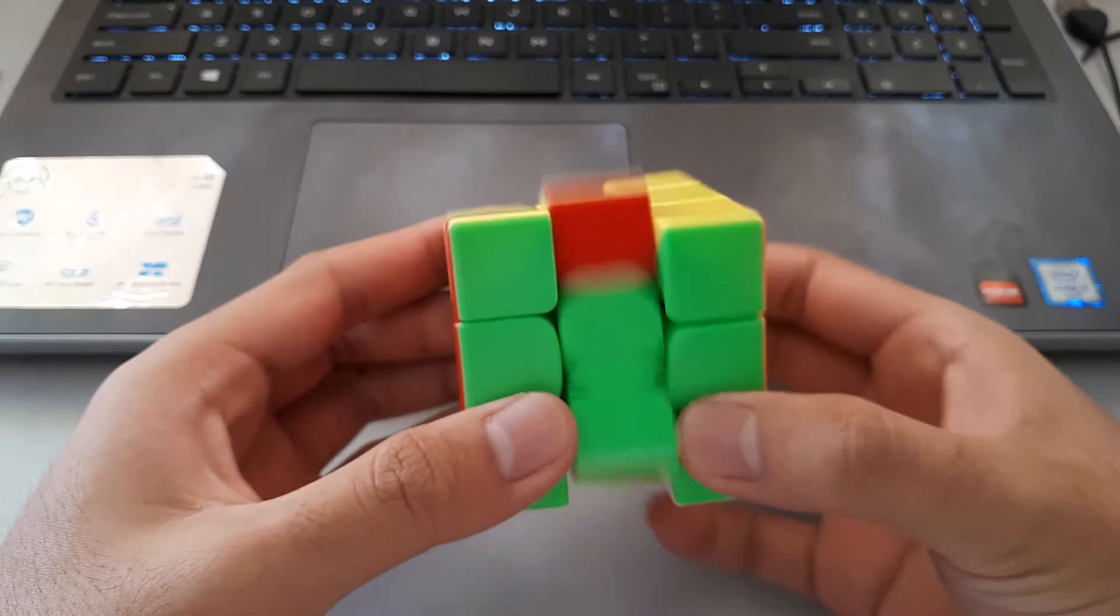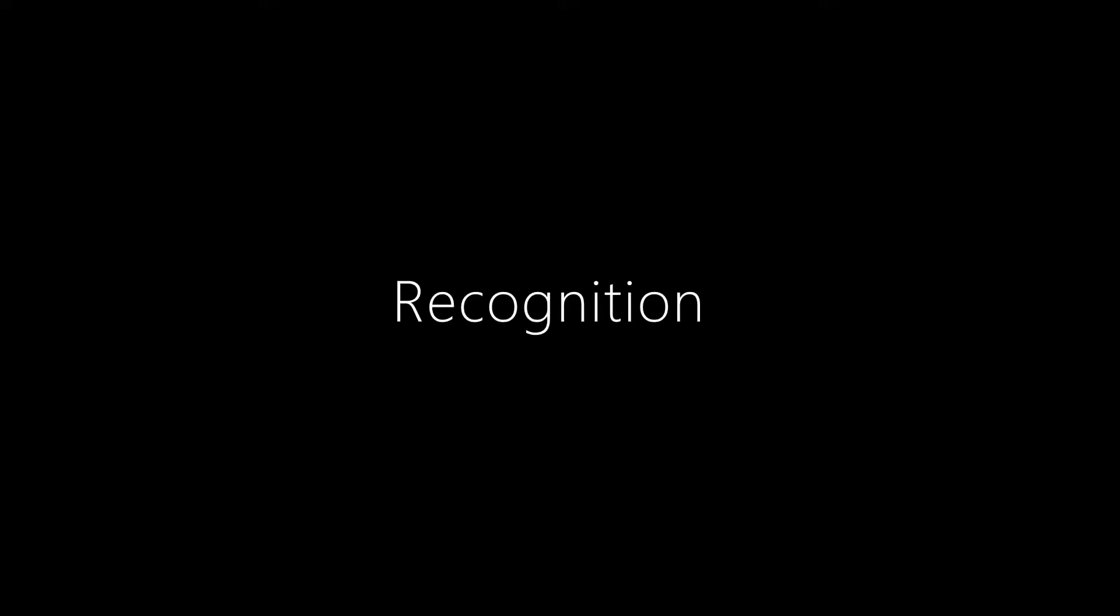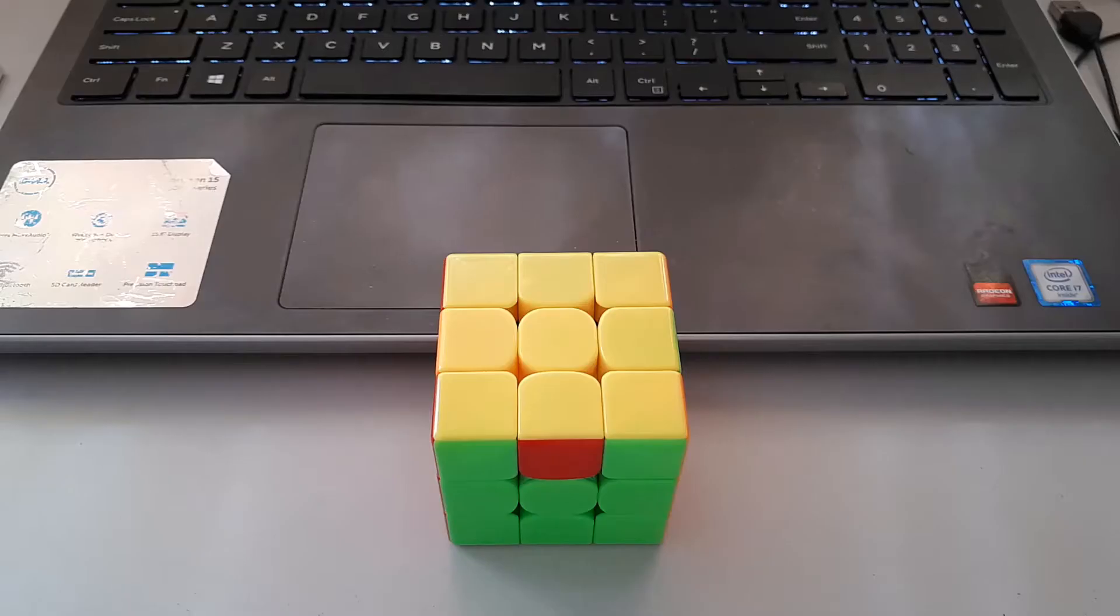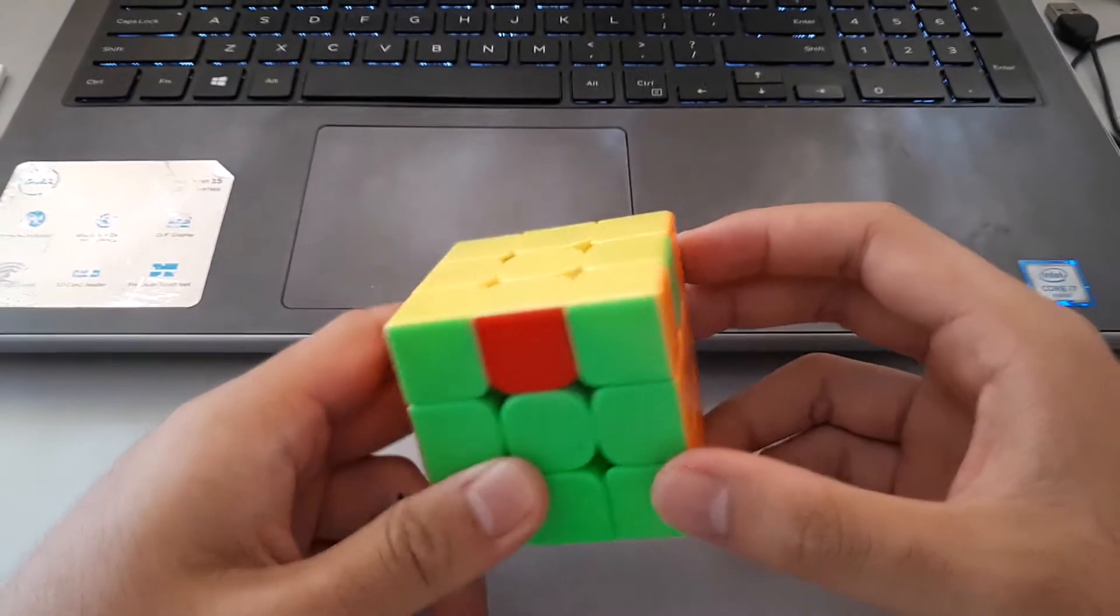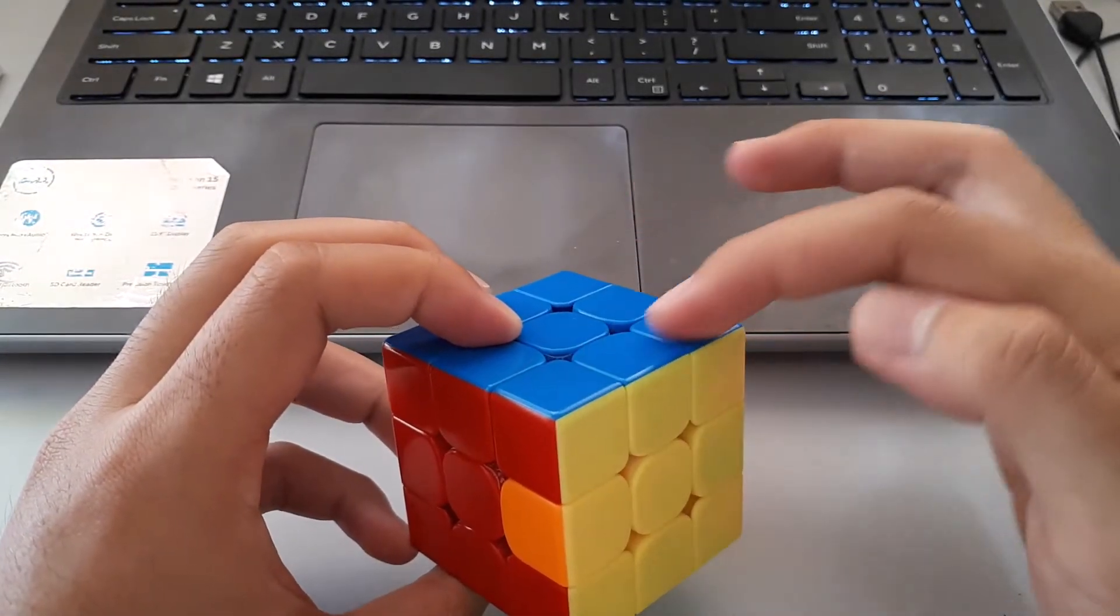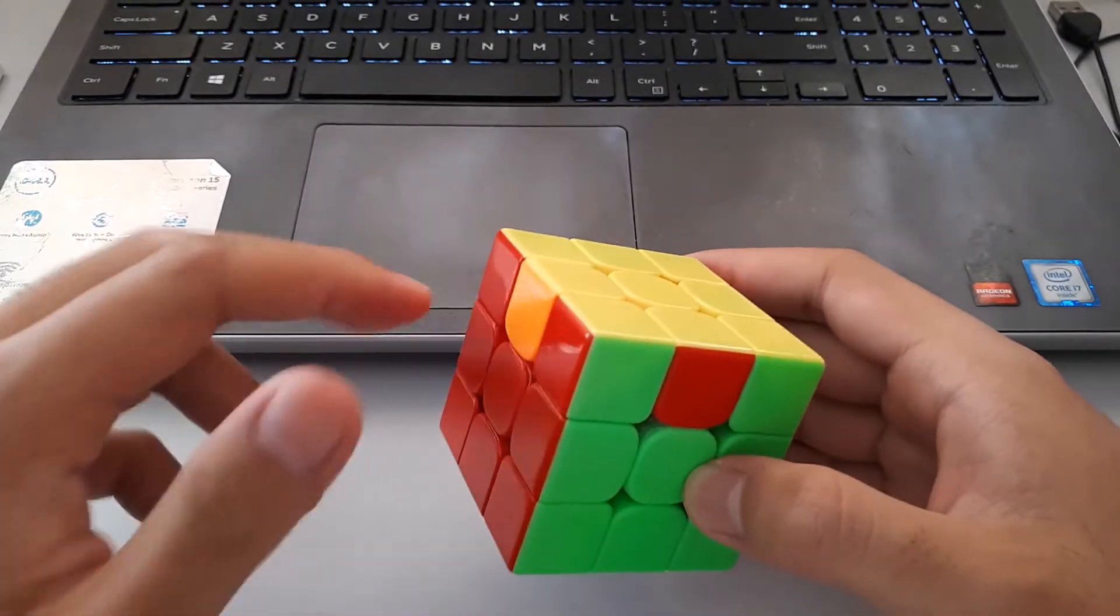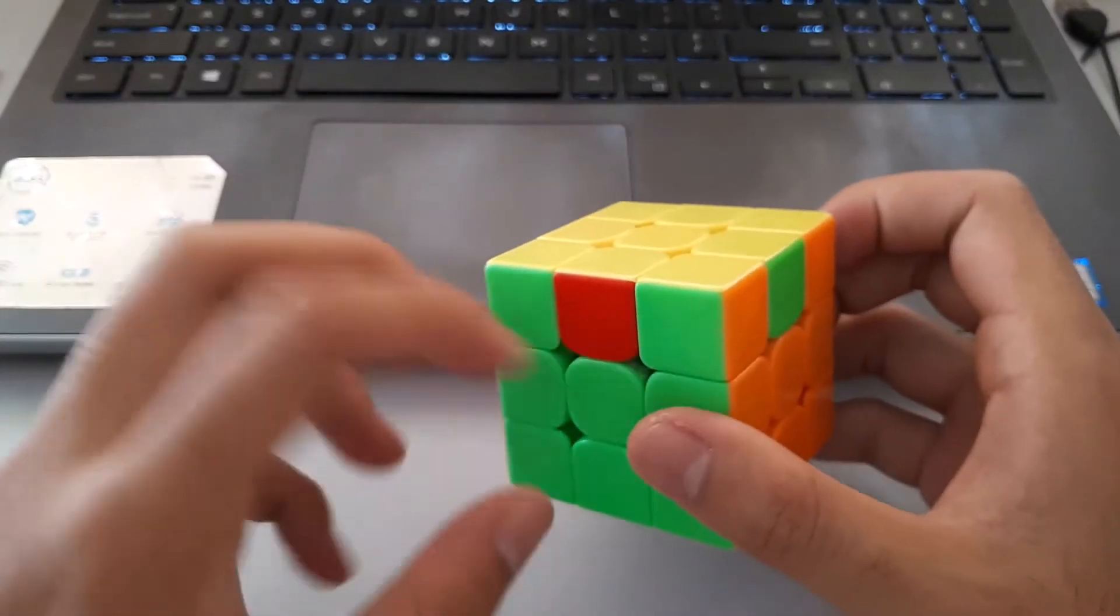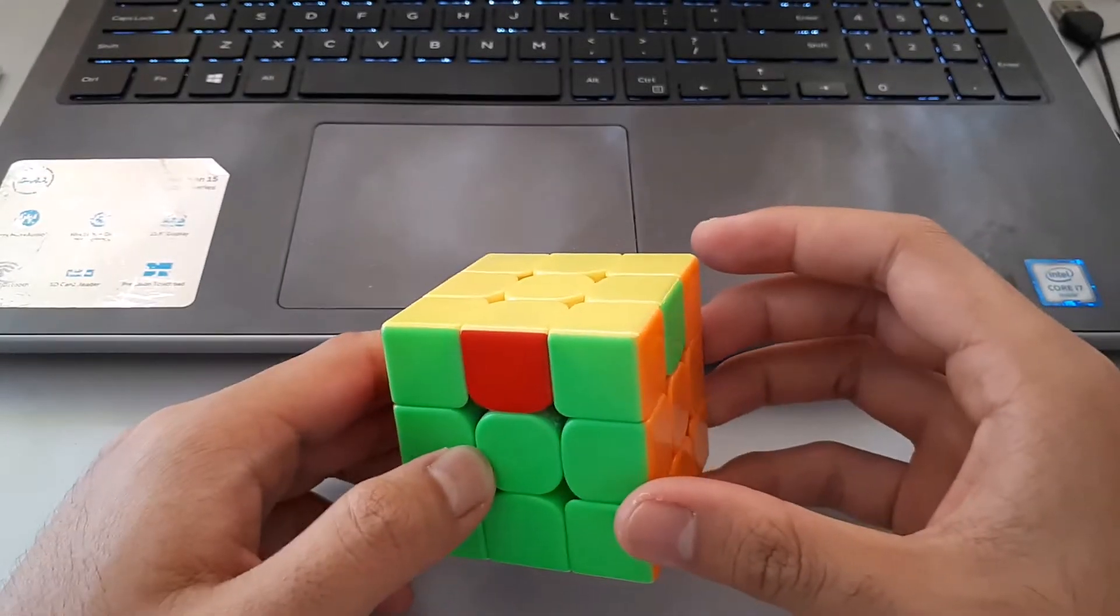Today's video will be going through some U-perms. So what is a U-perm? Well, a U-perm is one of the easier PLLs actually, and it can be recognized by having a solved bar here, normally placed at the back, and it has these headlights on all three of the other sides. Whenever you see that, that means you have a U-perm.